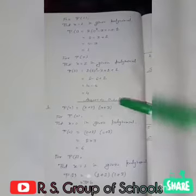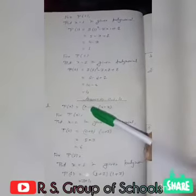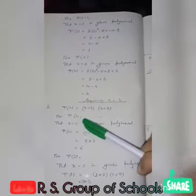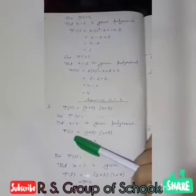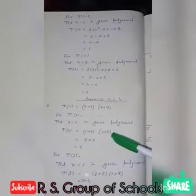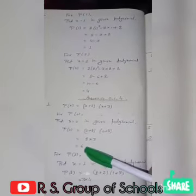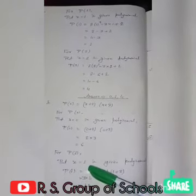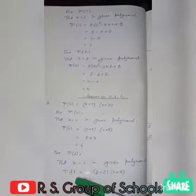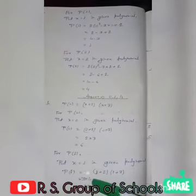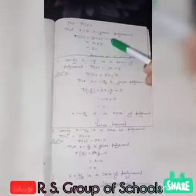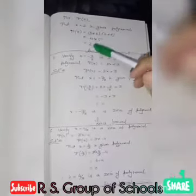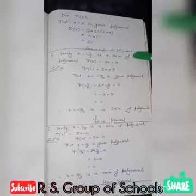Answers for first polynomial: p(0) equals 2, p(1) equals 1, p(2) equals 4. Second polynomial: p(x) equals x plus 2 times x plus 3. For p(0): 0 plus 2 into 0 plus 3 equals 2 into 3 equals 6. For p(1): 1 plus 2 times 1 plus 3 equals 3 into 4 equals 12. For p(2): 2 plus 2 times 2 plus 3 equals 4 into 5 equals 20. Answers: 6, 12, and 20.